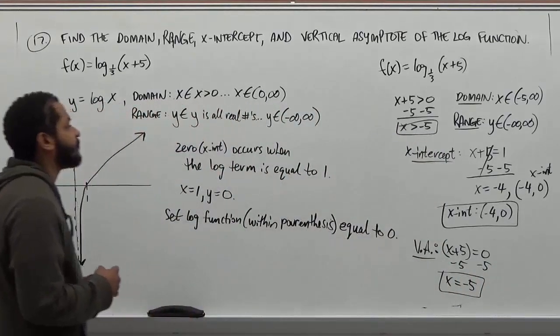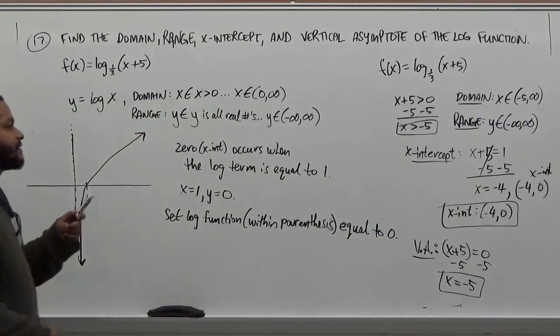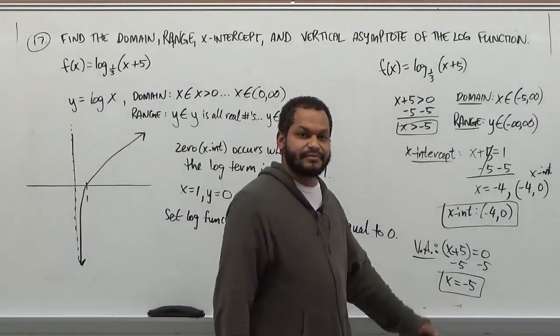And that concludes our four components. We have our domain, our range, our x-intercept, and our vertical asymptote. Thank you.